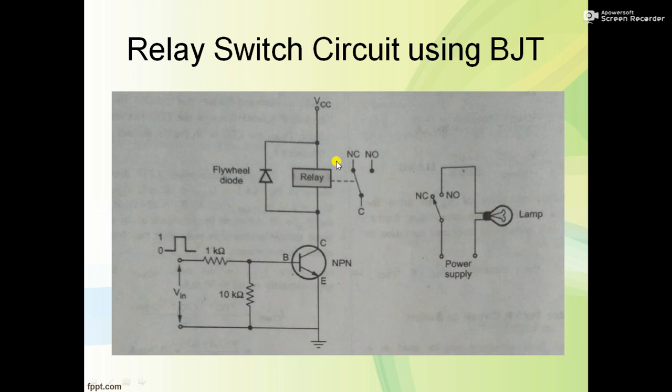With the help of this relay, we can control the lamp using BJT. Remember, when the transistor is off, the lamp is also off. When the transistor is on, the lamp is also on with the help of this relay switch.